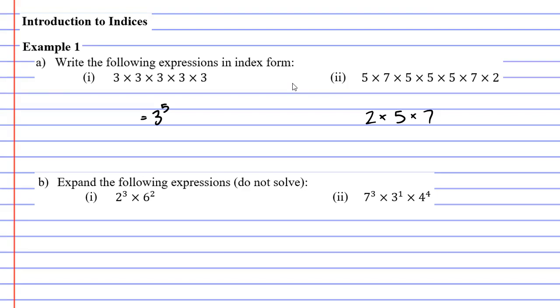You'll notice that we've got 1, 2, 3, 4, 5 fives, so we're going to give the 5 a power of 4 to say that there are 4 of them. And we've got 2 sevens, so we're going to give that a power of 2. And we only have 1 two, so we're just going to give it a power of 1.